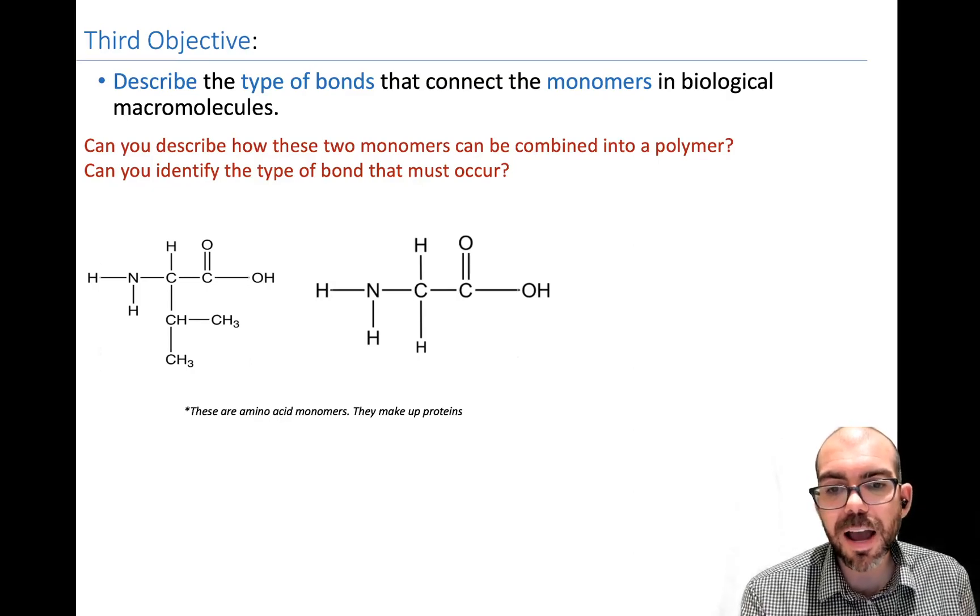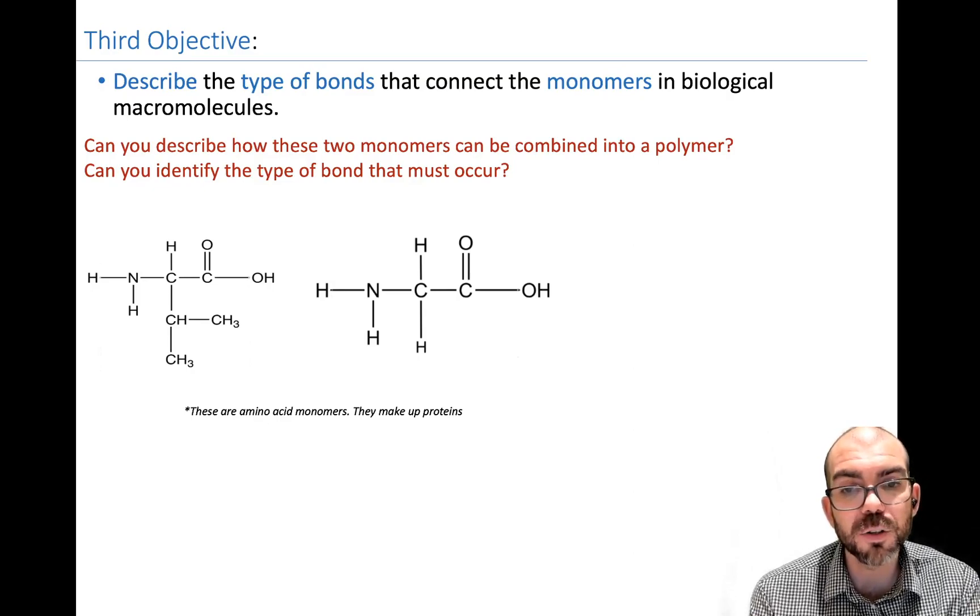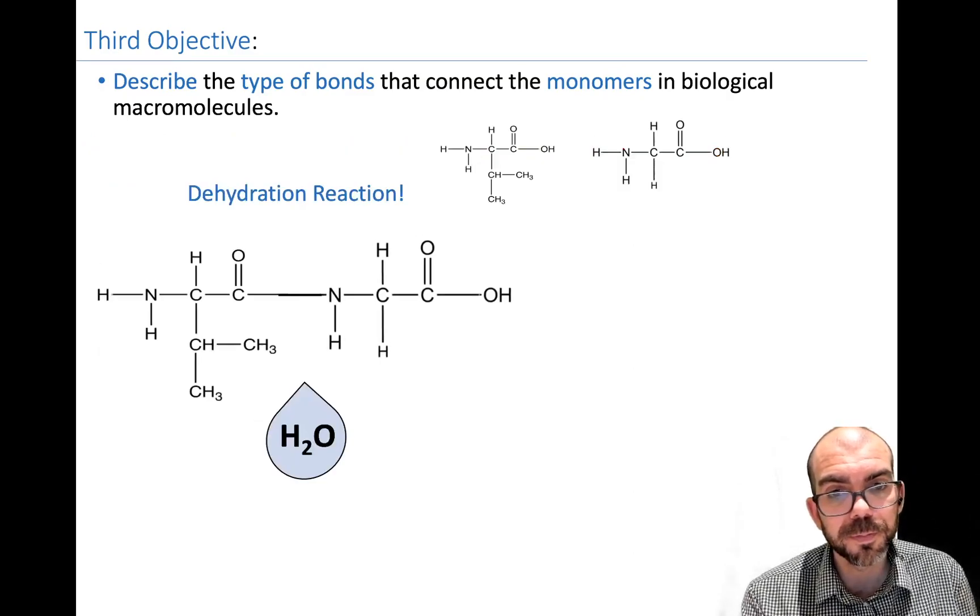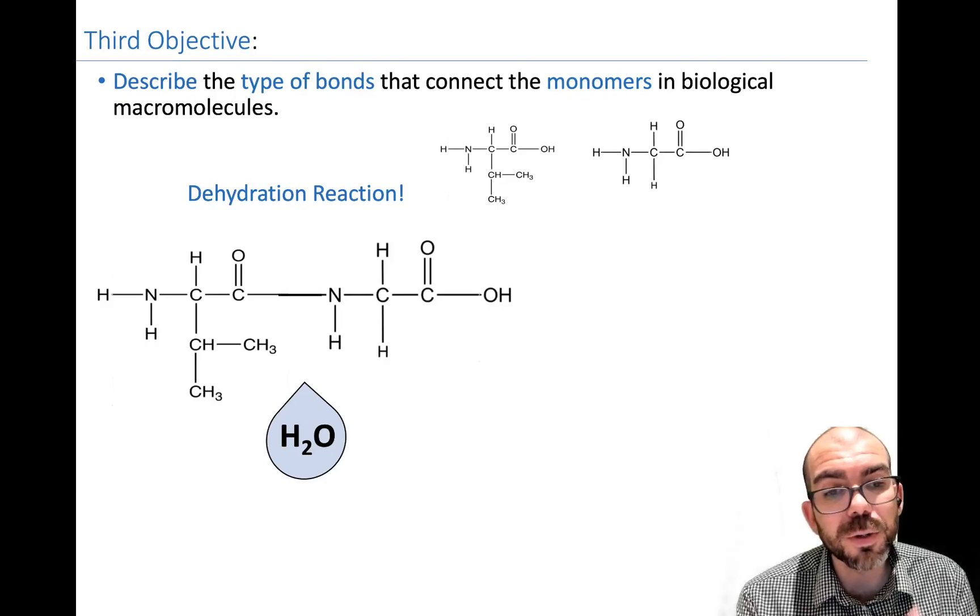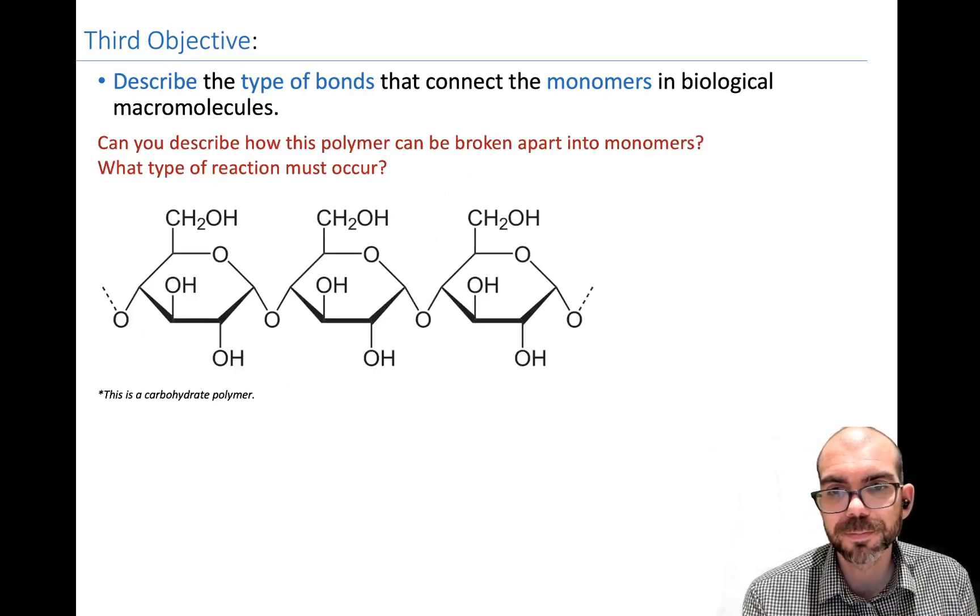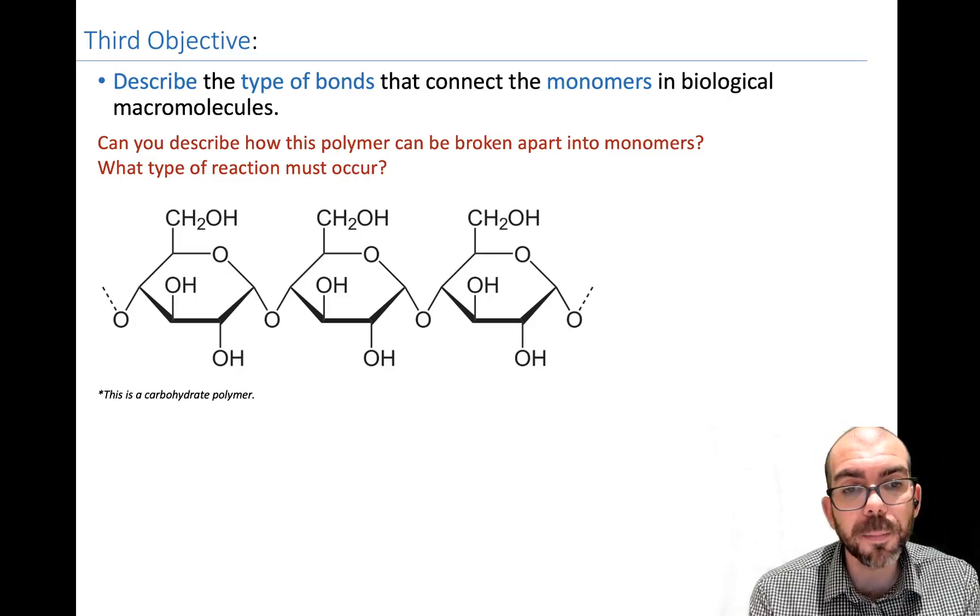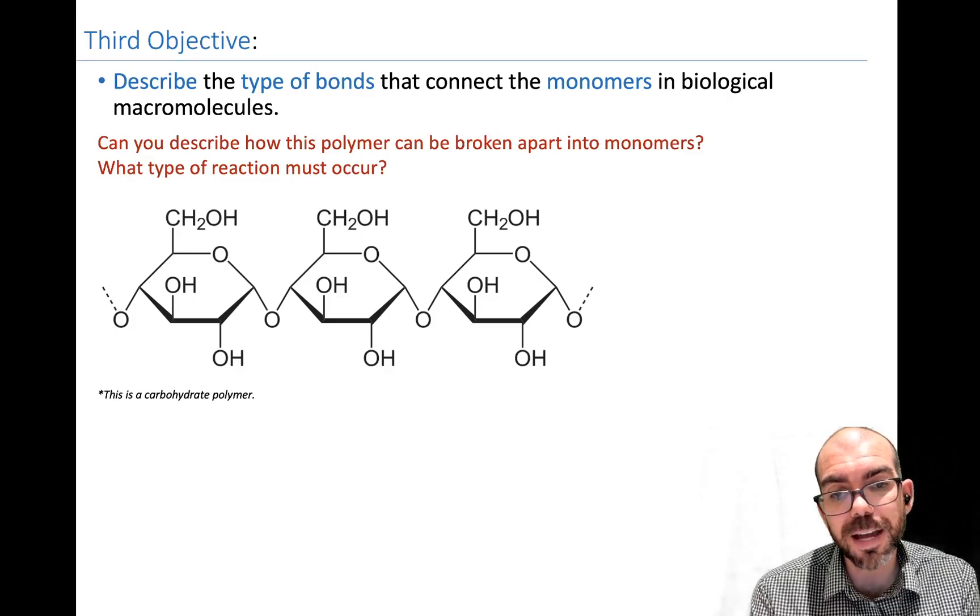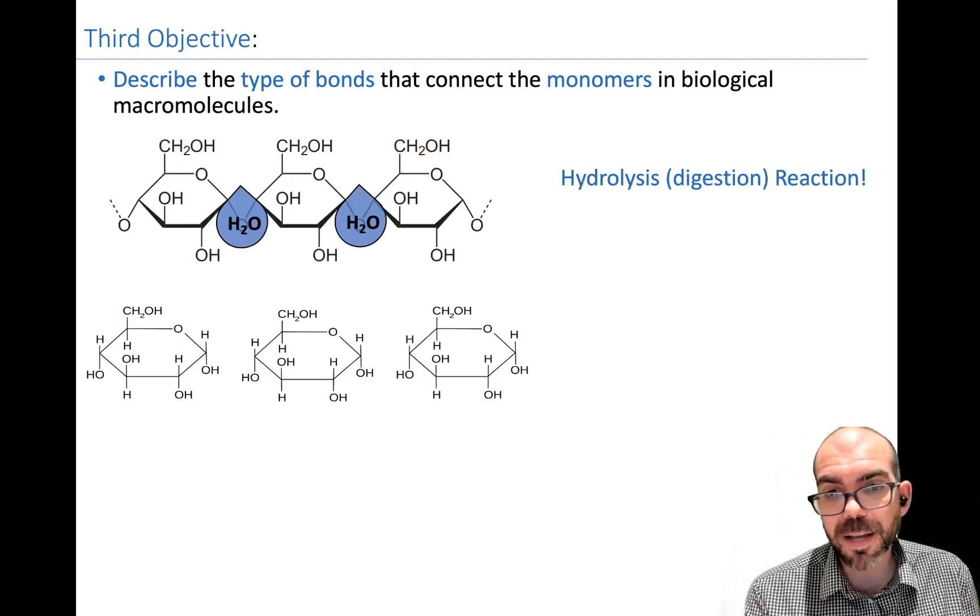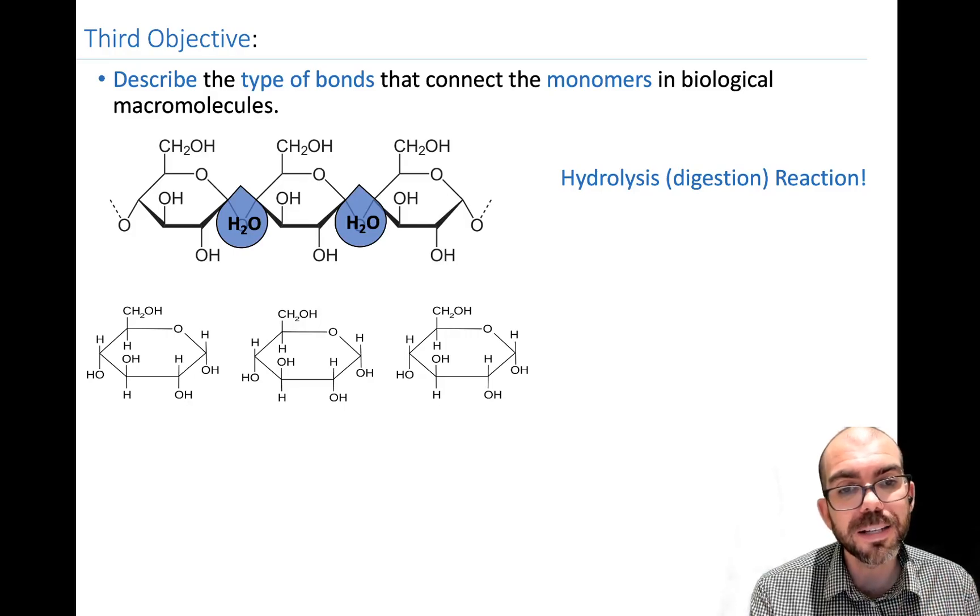Let's practice. Here I have two amino acid monomers. Could you describe how these two monomers can be combined into a polymer? And can you identify the type of bond that must occur? In this example, if I'm combining, I need to do a dehydration reaction. I need to take a water molecule out to form a bond. Here I have a carbohydrate polymer. Could you describe how this polymer can be broken apart into monomers? And what type of reaction must occur for that to happen? Since I'm breaking, I'm going to do a hydrolysis. Water is going to be inserted where all those covalent bonds are. And that's going to be used to break apart this polymer into individual monomers.